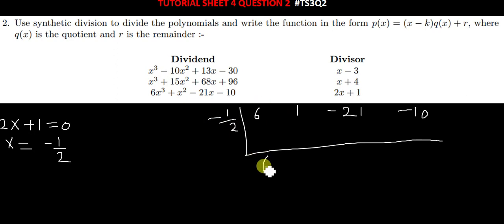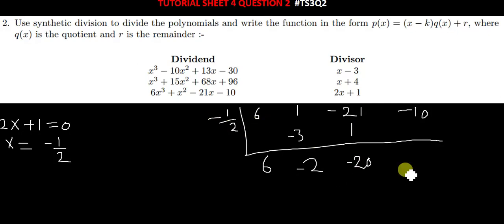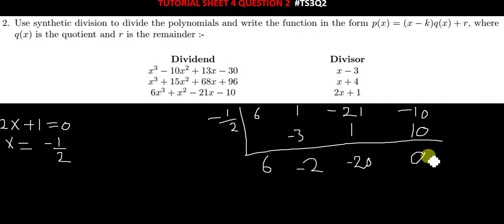We bring down the 6. Multiply negative half times 6, you get negative 3. Add it with 1, you get negative 2. Then negative half times negative 2, you get positive 1. When you add, you get negative 20. Then multiply negative half times negative 20, you get positive 10. When you add, you get 0. This simply means that 2x plus 1 is a factor of this polynomial, since the remainder is 0.